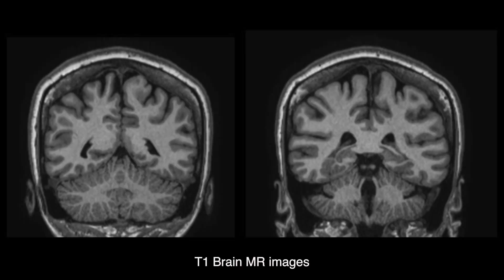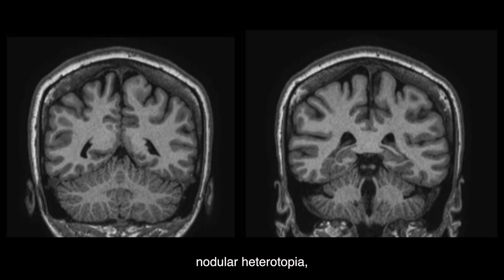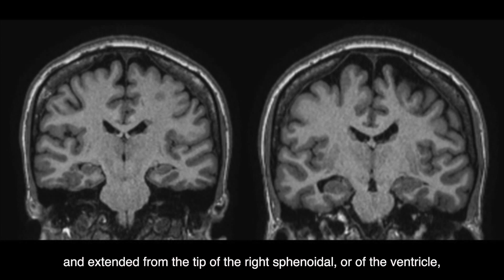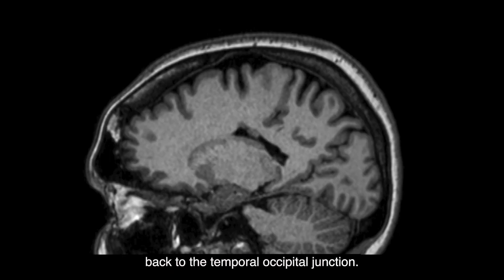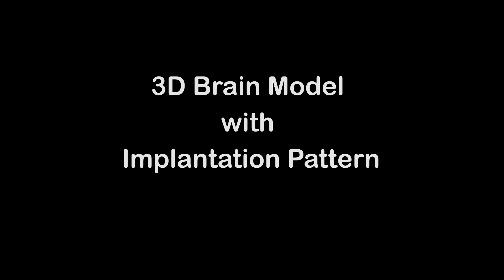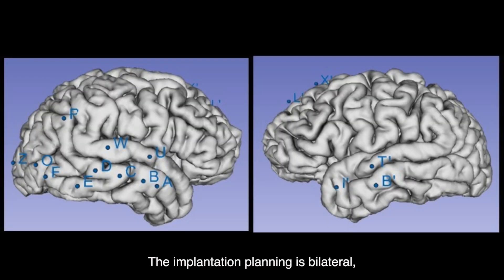T1 brain MRI images allow detection of bilateral periventricular nodular heterotopia, which is more evident on the right side and extends from the tip of the right sphenoidal horn of the ventricle back to the temporal-occipital junction. A contralateral nodule is visible at the level of the cella media. The implantation planning is bilateral, with particular attention to nodule coverage.